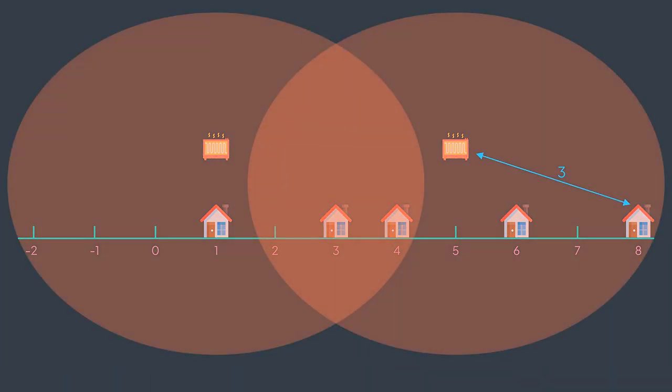So three is the smallest possible radius to cover all the houses — any smaller radius won't be enough to cover the house at position eight.